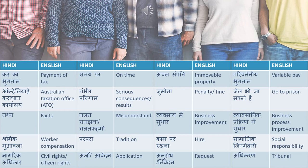Parivartaniya bhugtan means variable pay — parivartaniya is variable, pay is bhugtan. Australian Taxation Office — ATO. There is this taxation office in Australia which deals with all tax-related things and it is called Australian Taxation Office, ATO.